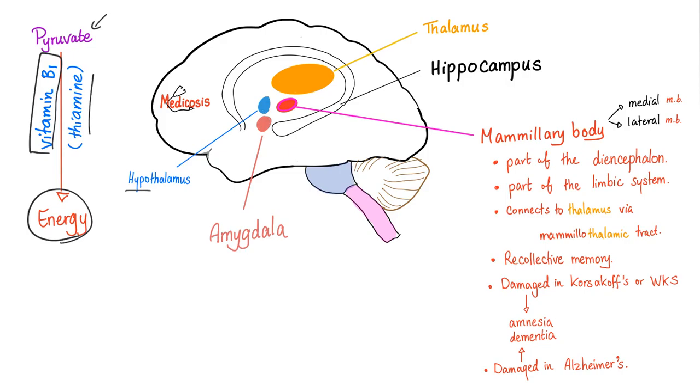Then we have this amygdala, which is like emotions, which is what differentiates humans from artificial intelligence. Mammillary bodies—we have two: medial mammillary body and lateral mammillary body.